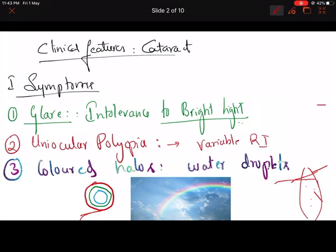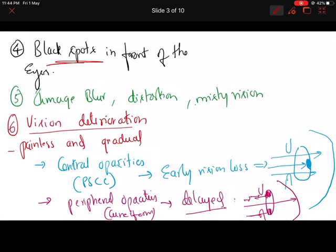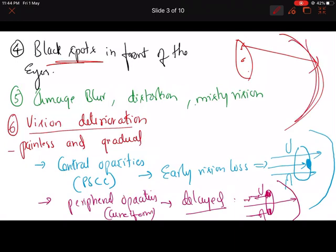Another symptom is black spot. In cataract, multiple opacities in the lens cast a shadow on the retina, which the patient perceives as a black spot in front of the eye. This is a fixed spot, unlike vitreous floaters which float around. In cataract, the black spot will be fixed, whereas in vitreous floaters the shadow moves around.